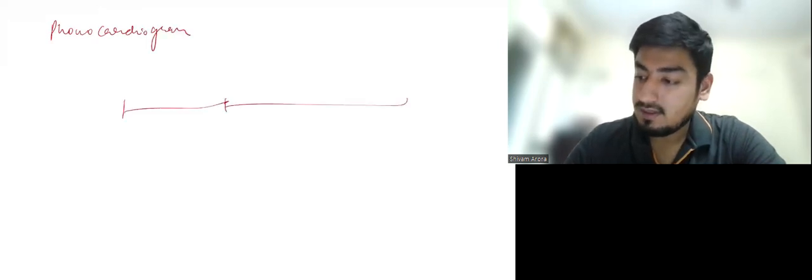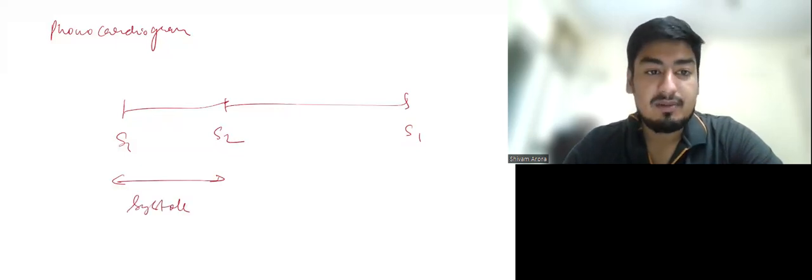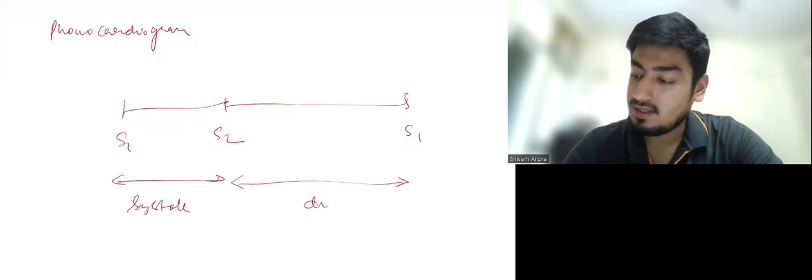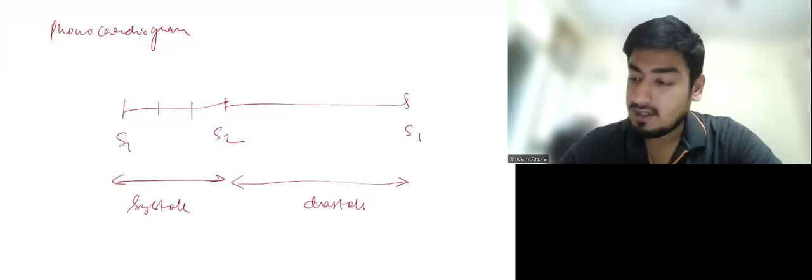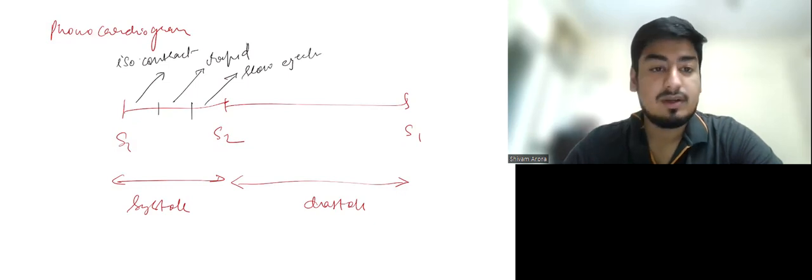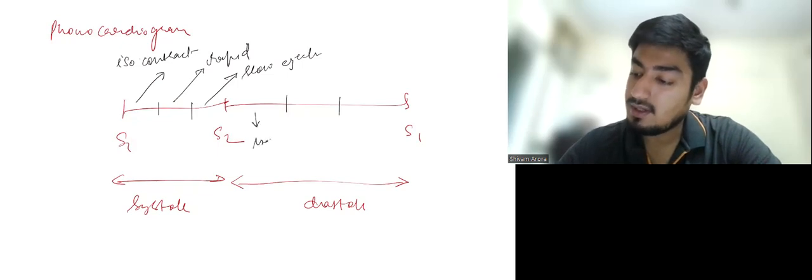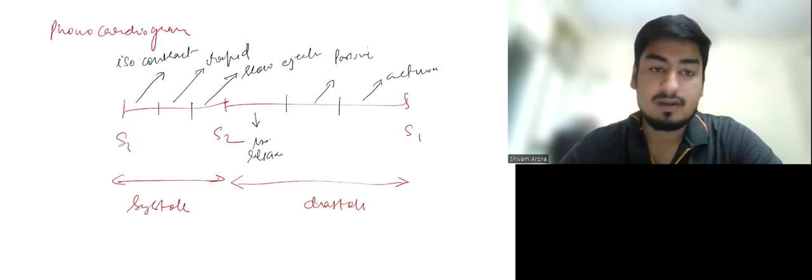We have this S1, S2, again S1. The part between S1 and S2 in a cardiac cycle is systole. The part between S2 and S1 is diastole. Then systole is again divided into 3 parts: isovolumetric contraction, then rapid ejection, and then slow ejection. Similarly, we can divide diastole into 3 parts: isovolumetric relaxation, passive filling, and then active filling.